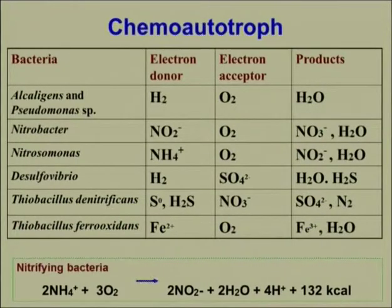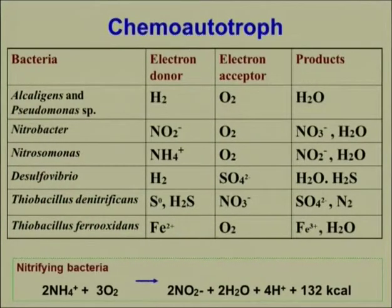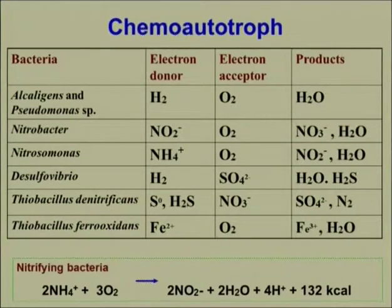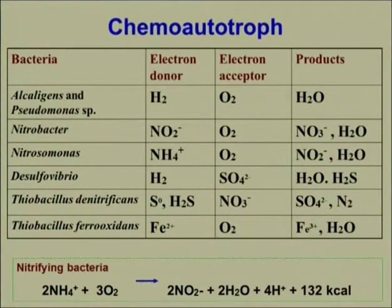Thiobacillus denitrificans uses sulfur or H2S as electron donor and NO3 as electron acceptor, producing sulfate and nitrogen gas. Thiobacillus ferrooxidans uses ferrous iron (Fe2+) as electron donor and oxygen as electron acceptor, with the ultimate product being ferric iron (Fe3+).